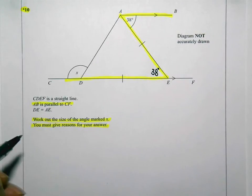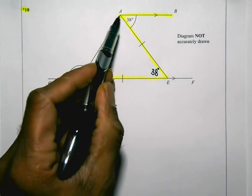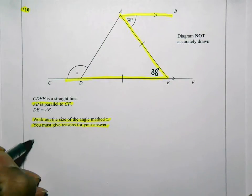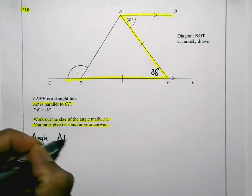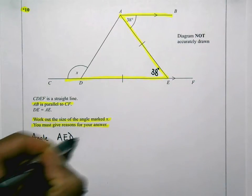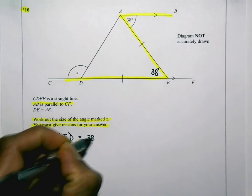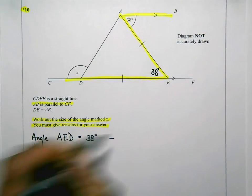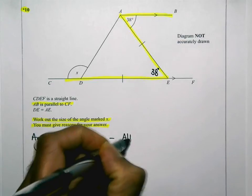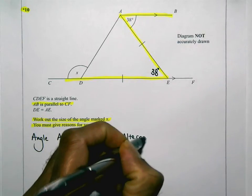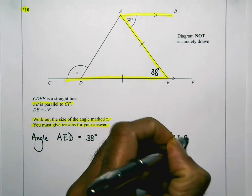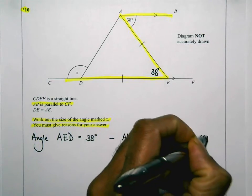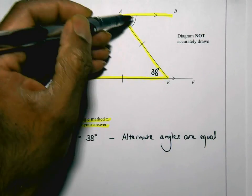So that angle there is angle AED. Angle AED is equal to 38 degrees. The reason is it's an alternate angle, or alternate angles are equal. So those two are alternate and they are equal.